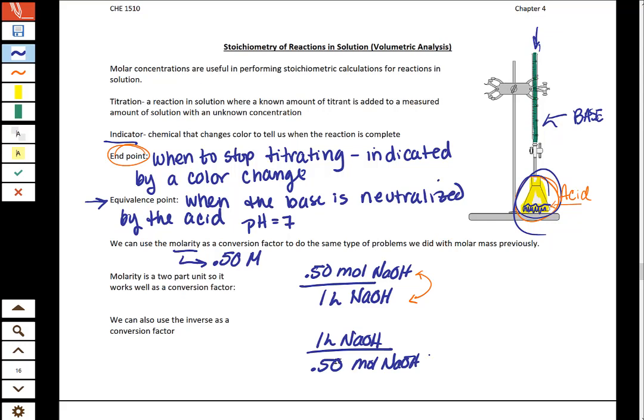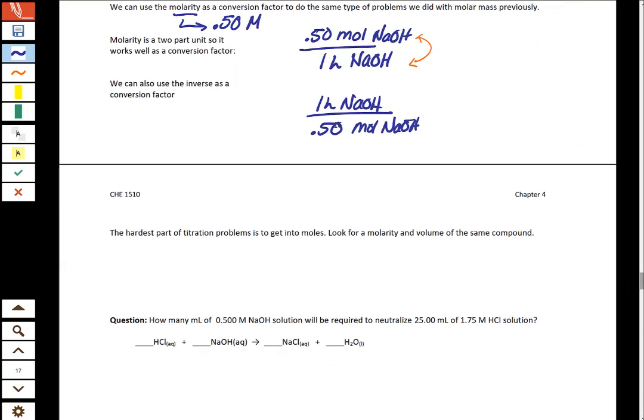So let's look at the first step of most titration problems. The hardest part for a titration problem is to know where to start. So what you're going to do is look for the molarity and the volume of a single compound. Because remember if molarity is moles over liters and you have a volume then you can multiply those and just get moles.